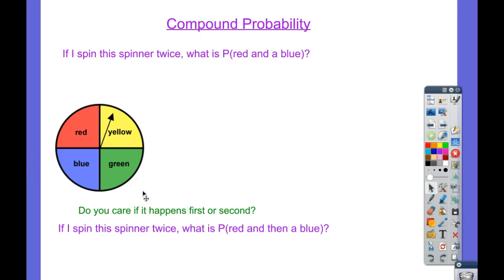Here's an example of compound probability. I'm going to take this spinner and spin it twice. What's the probability that I get a red and a blue in my two spins? I want a red and a blue.